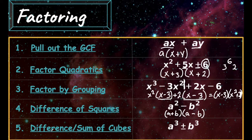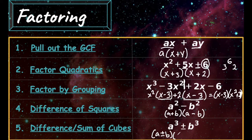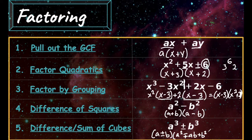The fifth way to factor is either the difference or sum of cubes. If you have a cubed plus or minus b cubed, you can use the following formula to factor it out. It's going to be a plus or minus b — whatever sign you have — times a squared, then the opposite sign, then a times b, and the last sign is always going to be positive, plus b squared.